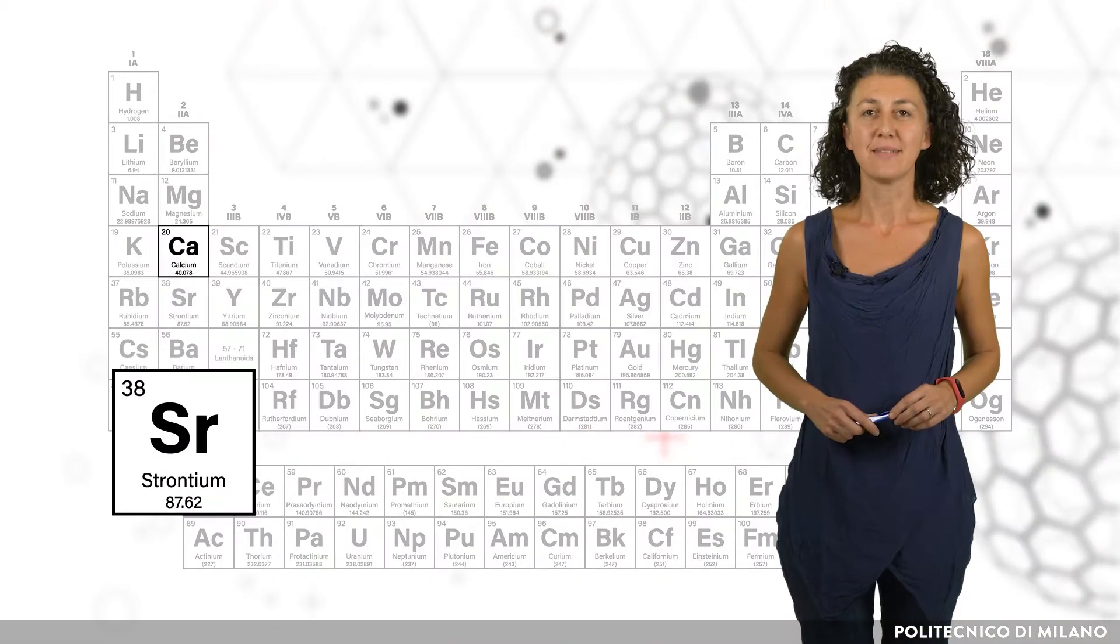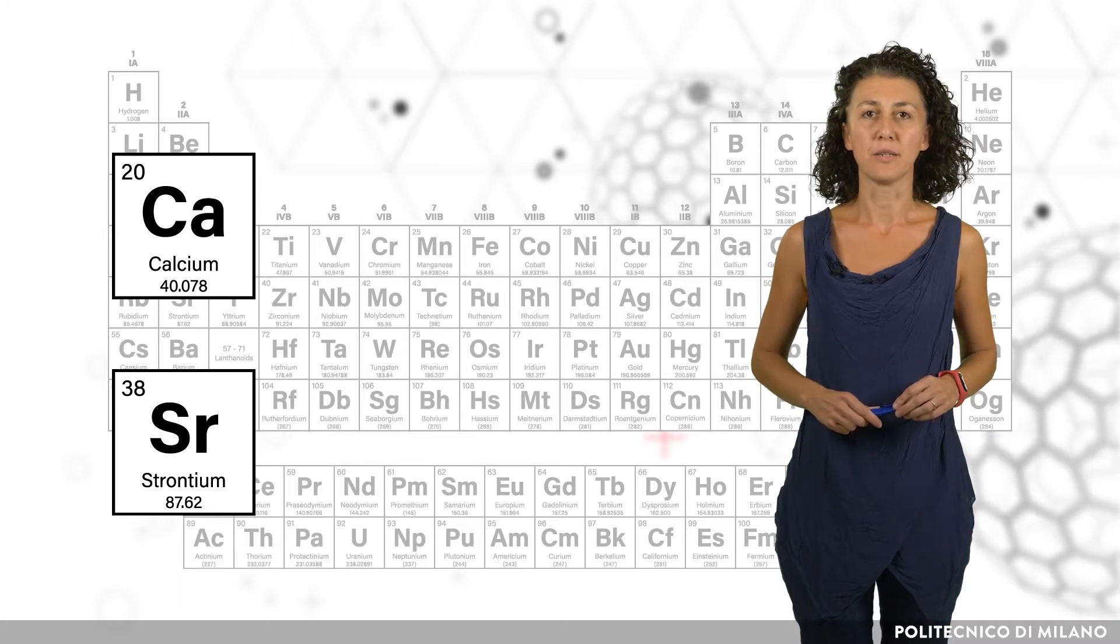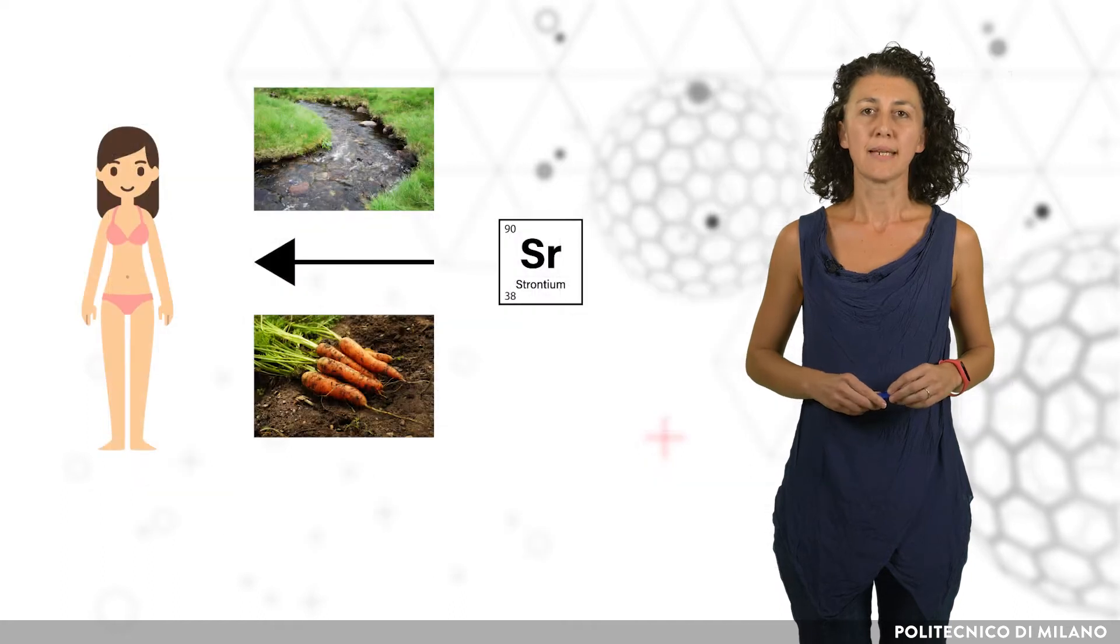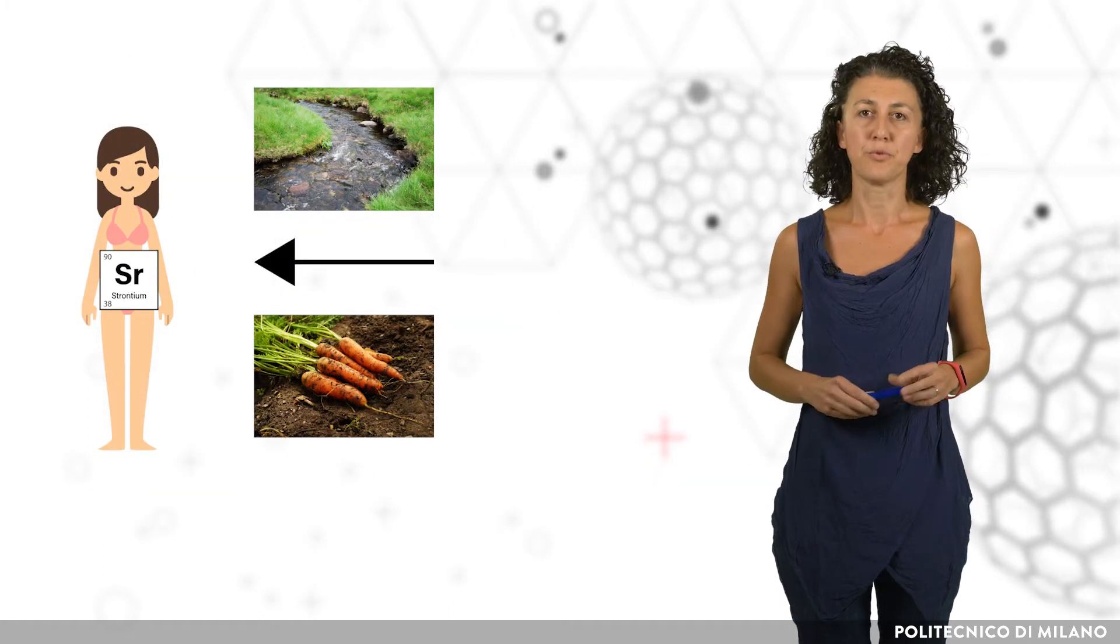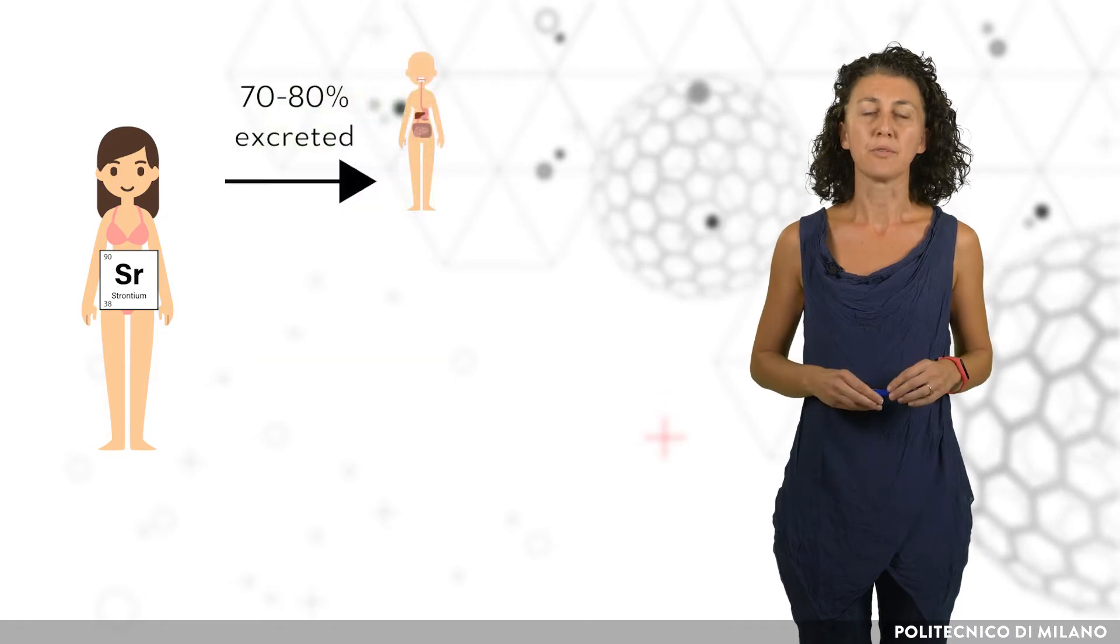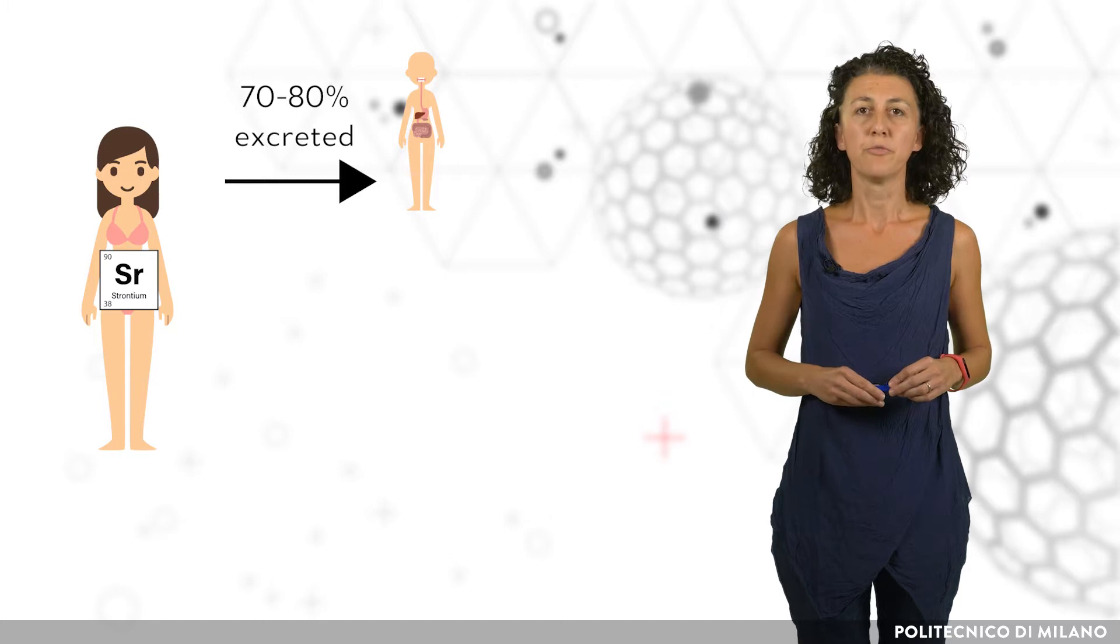Strontium-90 is a bone seeker that exhibits biochemical behavior similar to calcium, the next lighter element in Group 2. After entering the organism, most often by ingestion with contaminated food or water, about 70-80% of it gets excreted.